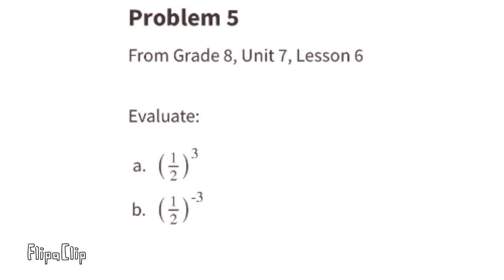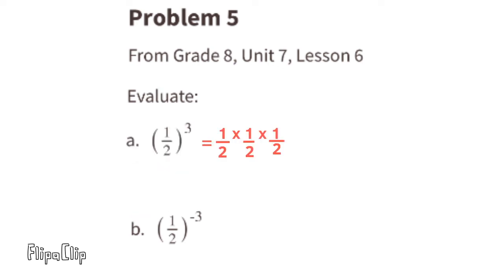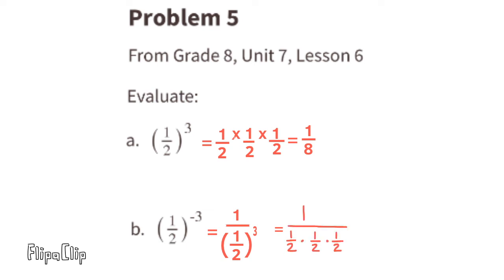Problem number five from eighth grade Unit 7, Lesson 6. Evaluate: (a) (1/2)³ = 1/2 × 1/2 × 1/2 = 1/8. (b) (1/2)⁻³ = 1 / (1/2)³ = 1 / (1/8). Since 1 ÷ (1/8) asks how many times 1/8 goes into 1, the answer is 8.